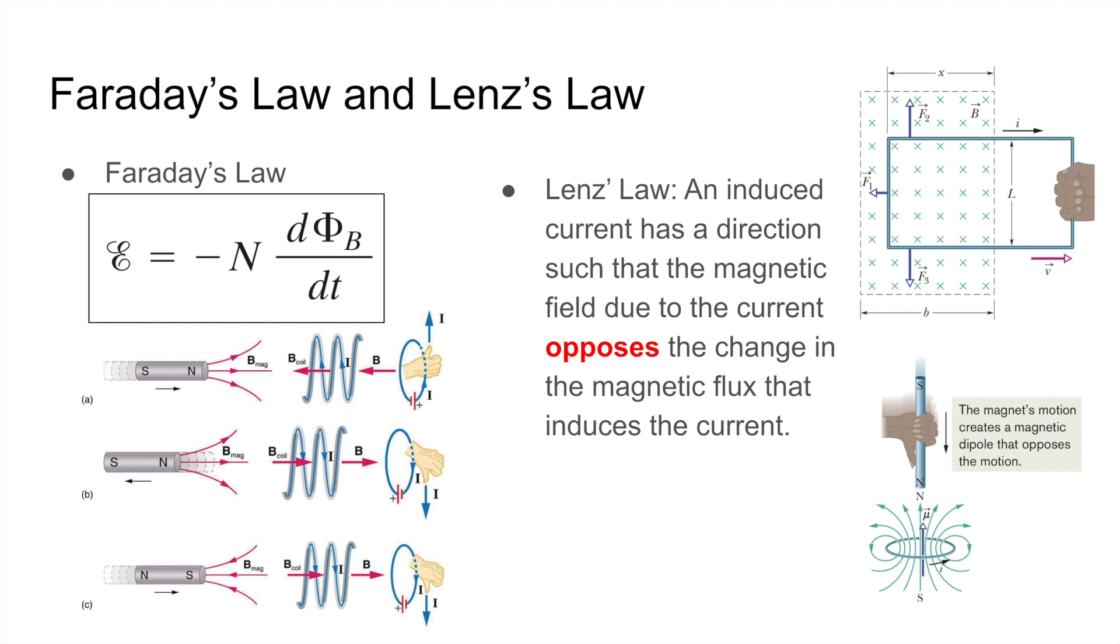Magnetic flux is used in Faraday's law. Faraday's law states that the EMF induced in a coil of N turns is equal to negative N times the change in magnetic flux over time. And Lenz's law, which is part of Faraday's law, states that the induced current has a direction such that the magnetic field due to the current opposes the change in the magnetic flux that induces the current, and that's represented by the negative sign in Faraday's law.